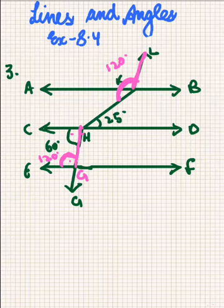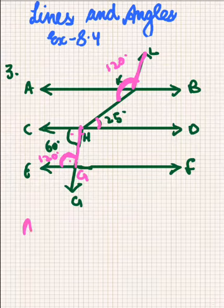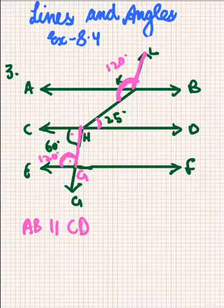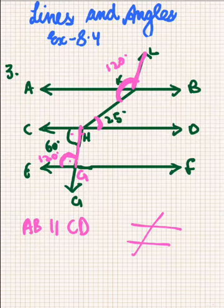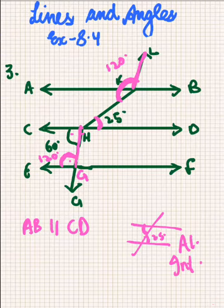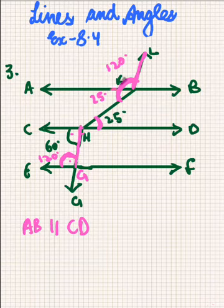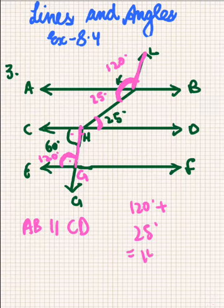Now if we observe this 25 degrees — what's the role of this 25 degrees? We are given that AB is parallel to CD. So if we draw this in a rough diagram, here is 25 degrees. This angle and this angle are both alternate interior angles, so this will also be equal — it is also 25 degrees. Now it's simple: we have to add both of these angles. So 120 plus 25 will be equal to 145 degrees.